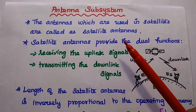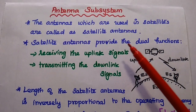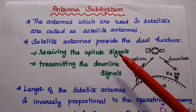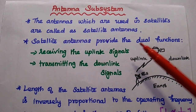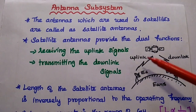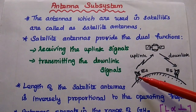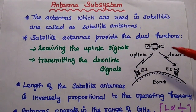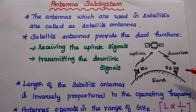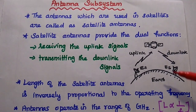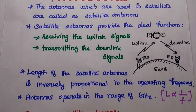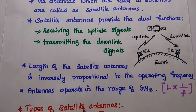The antennas which are used in satellites are called satellite antennas. Satellite antennas provide dual functions: one is receiving the uplink signals from the earth station, and the next one is transmitting the downlink signals to the earth station. So they can support both uplink and downlink.